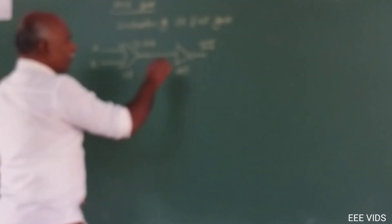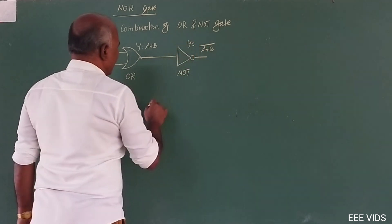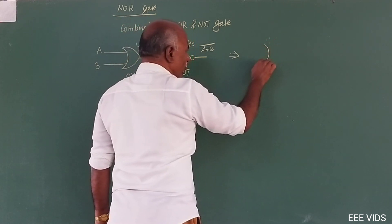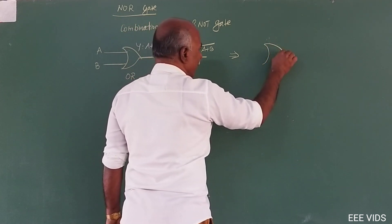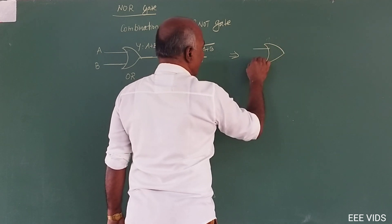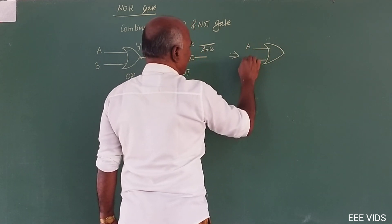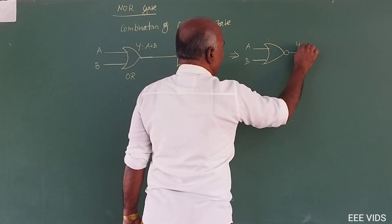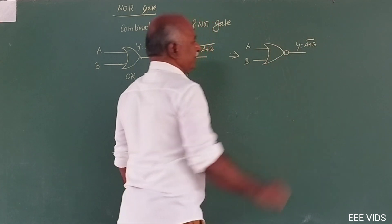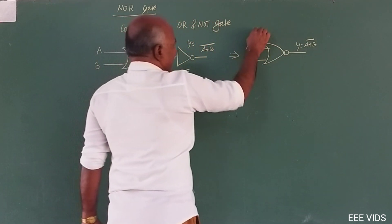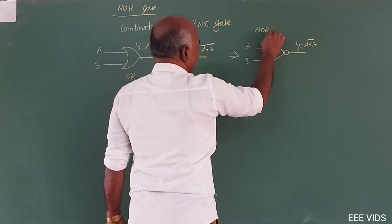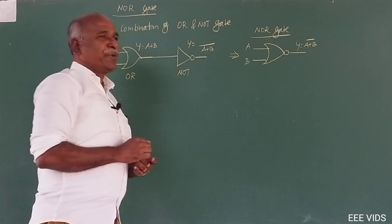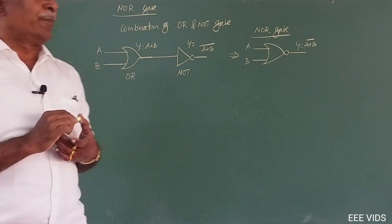Output y is equal to a plus b complement. In the symbol, to show complement, a bubble is used at the output of the OR gate. That bubble indicates the complement — a plus b complement. This is the NOR gate symbol. OR gate with a bubble at the output gives the complement, and that symbol represents the NOR gate.